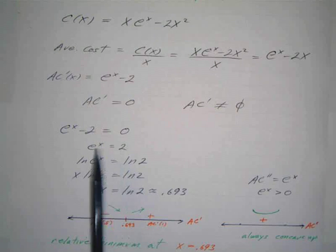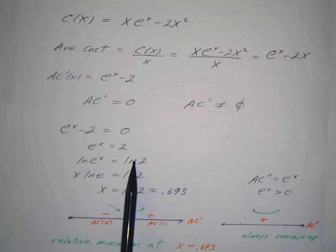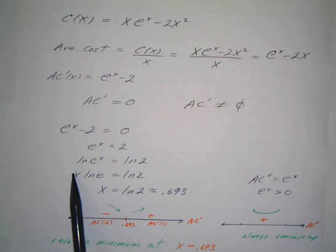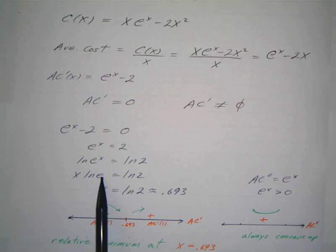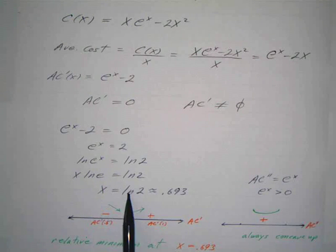I have a logarithmic exponential equation. I take the natural log of both sides, bring the x in front, and the natural log of e is just 1. So x equals the natural log of 2, which is 0.693.